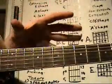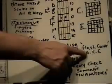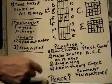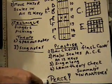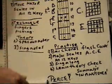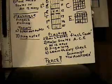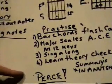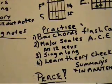If you get those four scale shapes down in the A system — sing along with what you play, learn the theory. Check out all the summaries in a nutshell, the courses. If you know all that, you're going to get on great.